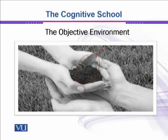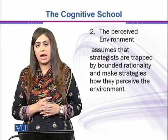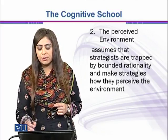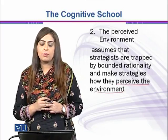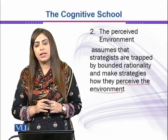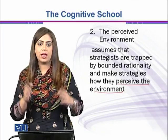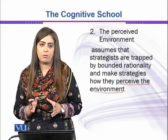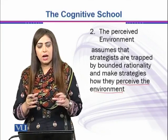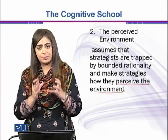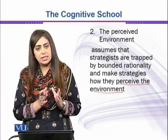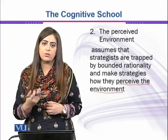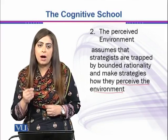The perceived environment assumes that strategists are trapped by bounded rationality and make strategies based on how they perceive the environment. Strategists perceive the environment according to their own understanding, their own mental maps and mental schemas. We have multiple kinds of information, but in order to cope with this complex and diverse information, we try to process only what is necessary — so we have bounded rationality, which means we take decisions based on what is evident and necessary at that time. The perception of the strategist about the environment is very important for decision making.